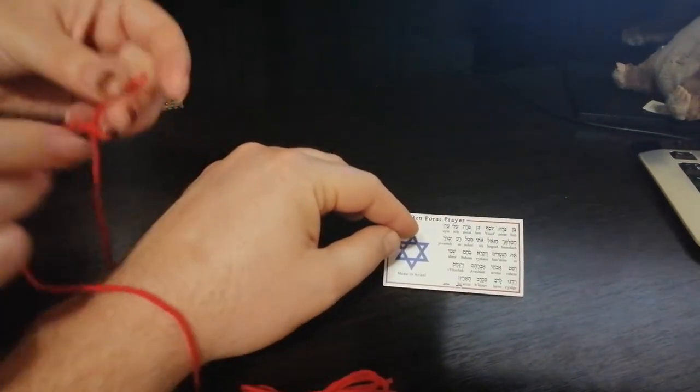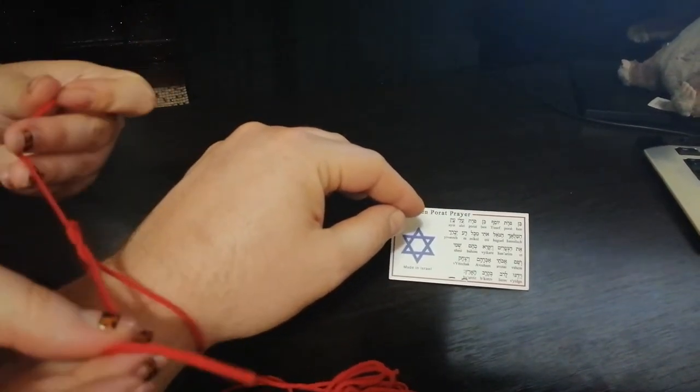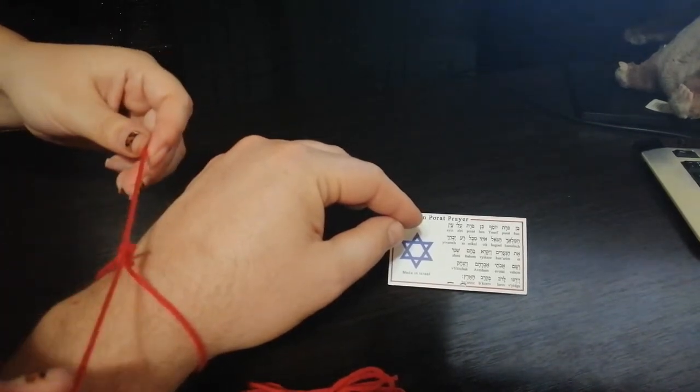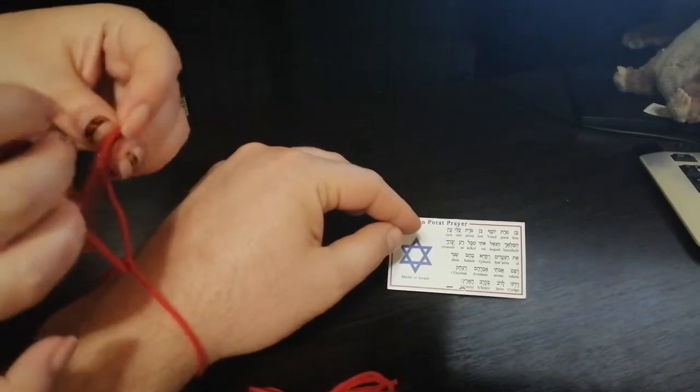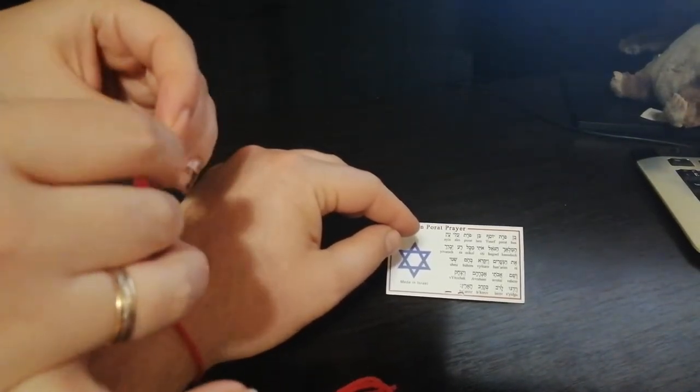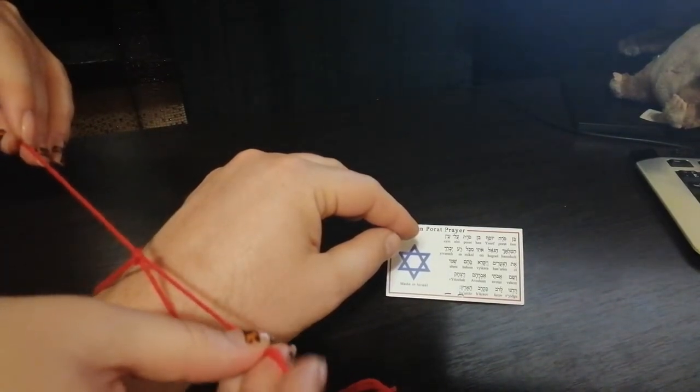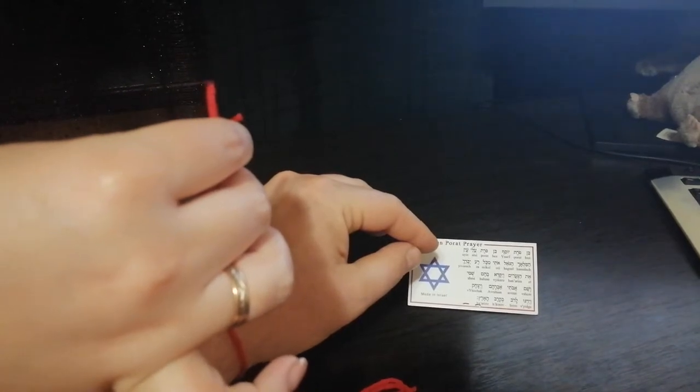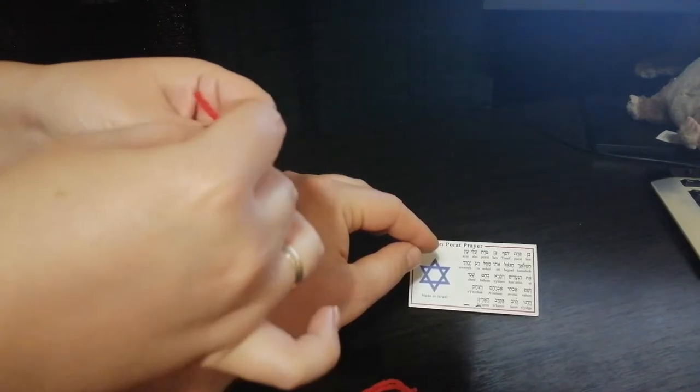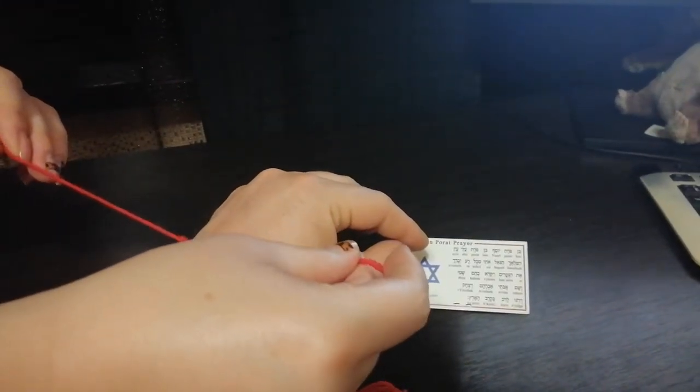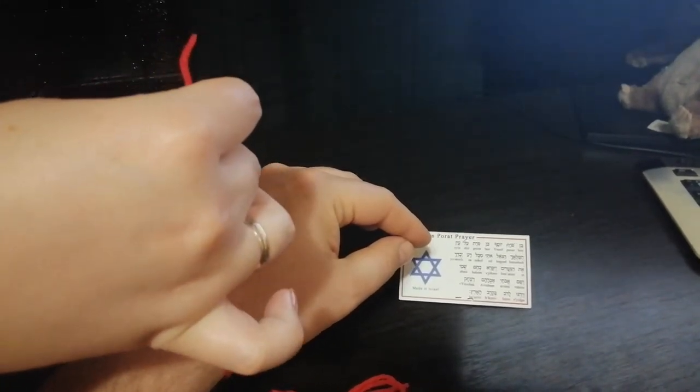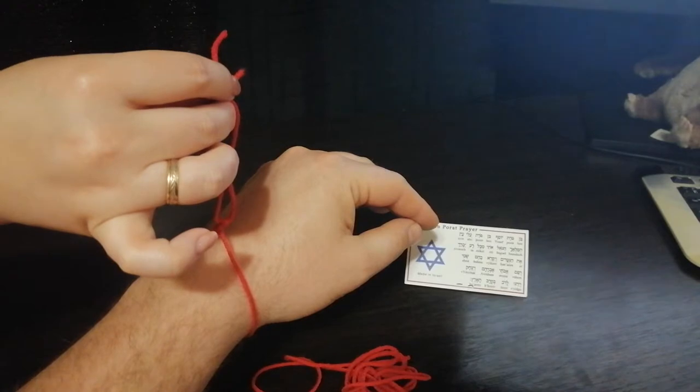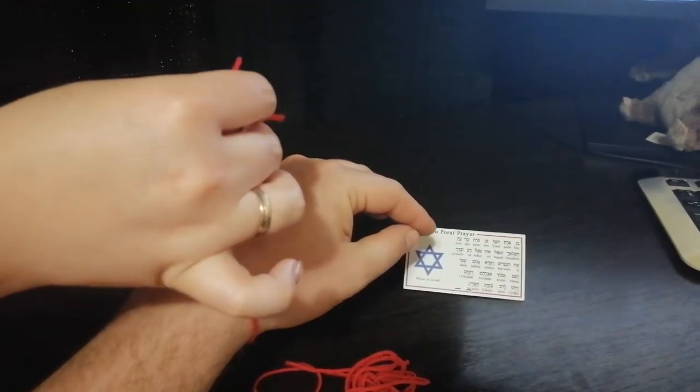Ben Porat Yosef, Ben Porat Porat Aleian, Banit Zadar Aleisha, Hamalak Hagoyaloti Mikkel Raya Varari Kahanaram Vaya Kare Baram, Shmi Veshem Avatai Avraham Vizchak Vyadrula Rav Bekare Haaretz.